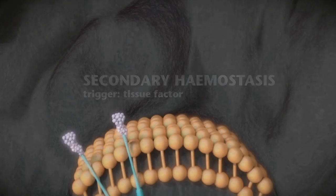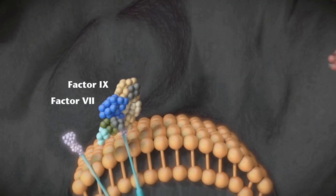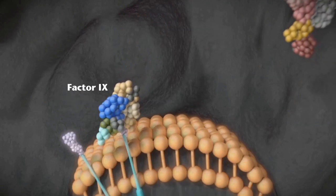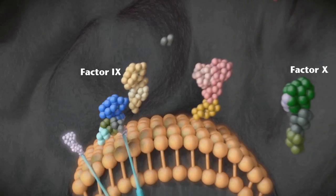Tissue factor exposed to blood will bind coagulation factor VII, resulting in the formation of an activated factor VII tissue factor complex. This complex binds and activates factor IX and also factor X.